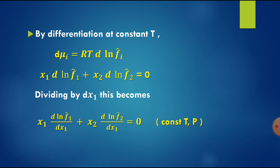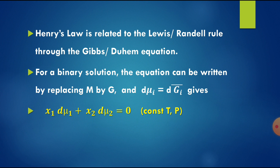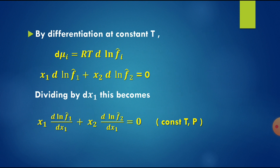By differentiating, we get d mu_i equals RT d ln F_i cap. Substituting into the Gibbs-Duhem equation gives x_1 d ln F_1 cap plus x_2 d ln F_2 cap equals 0. We substitute d mu_1 and d mu_2 using d mu_i equals RT d ln F_i cap, and RT cancels out. Dividing by dx_1 gives: x_1 (d ln F_1 cap / dx_1) plus x_2 (d ln F_2 cap / dx_1) equals 0 at constant temperature and pressure.